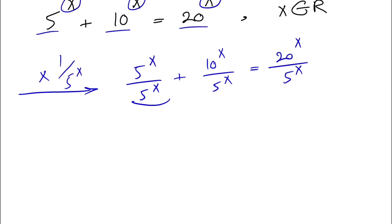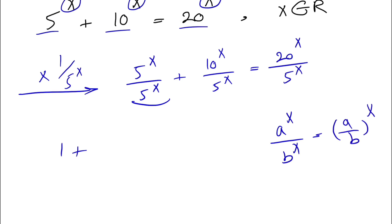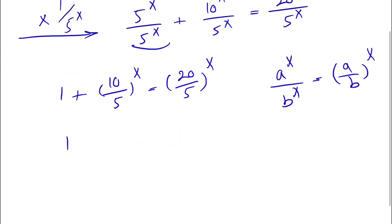From the first term we get 1. Now recall the exponent law: a^x divided by b^x equals (a/b)^x. Applying that, 10^x over 5^x is (10/5)^x = 2^x, and 20^x over 5^x is (20/5)^x = 4^x. So our equation becomes 1 plus 2^x equals 4^x.